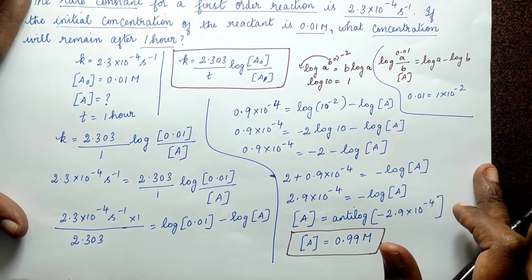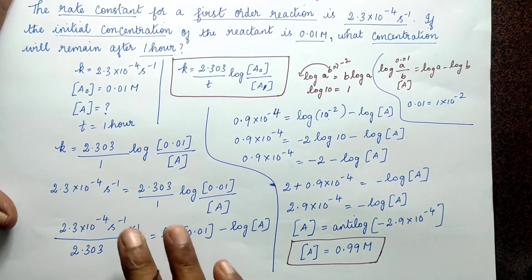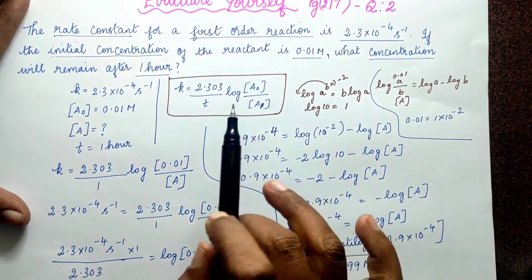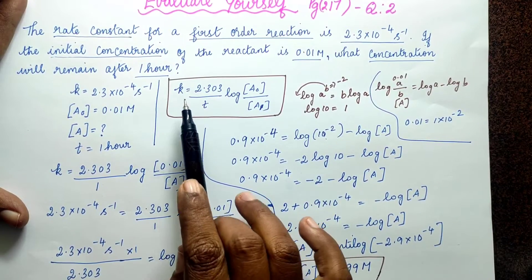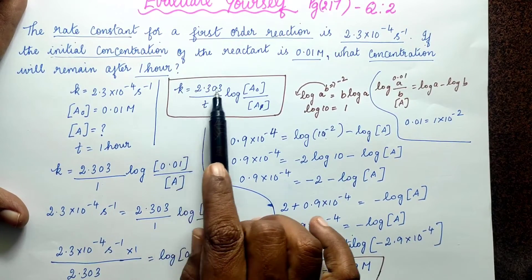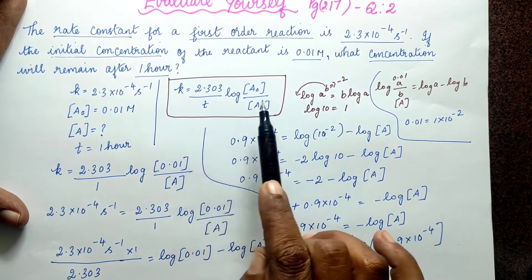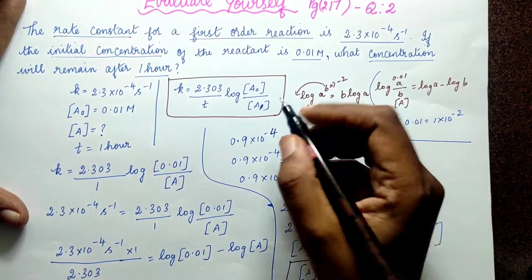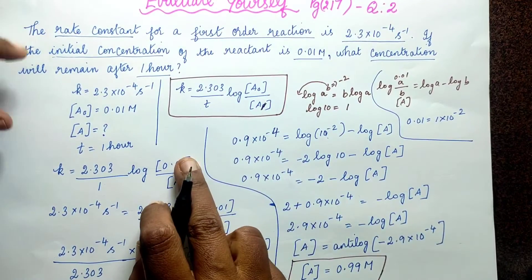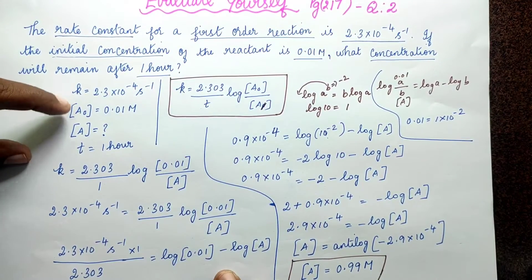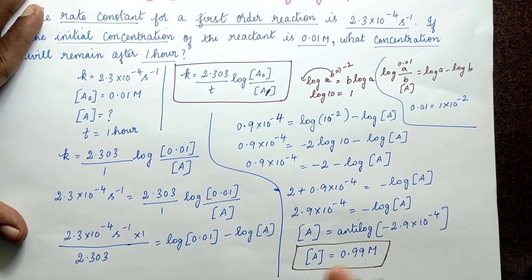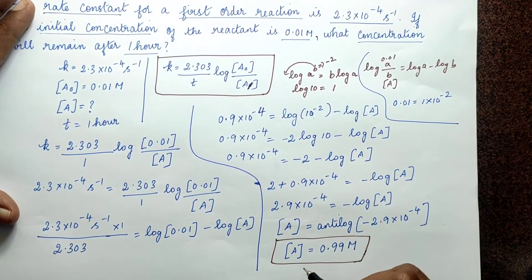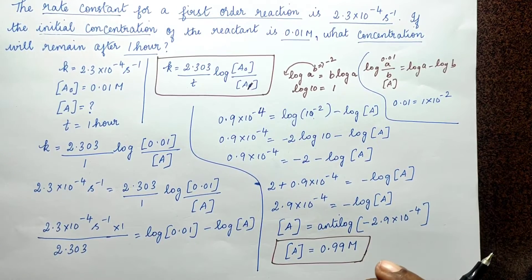So to summarize how we solved this: it is a first order reaction, so we substituted into the first order equation k = 2.303 / T × log(A₀ / A), using the given rate constant, initial concentration, and time of 1 hour to find the final concentration.